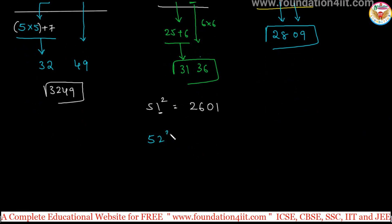52 square: 25 plus 2, simple, 27. And 2 square is 4, so 04 you can take. And 54 square: 25 plus units place, 25 plus 4, simple, 29. And 16 - I wrote 16 because of 4 square.